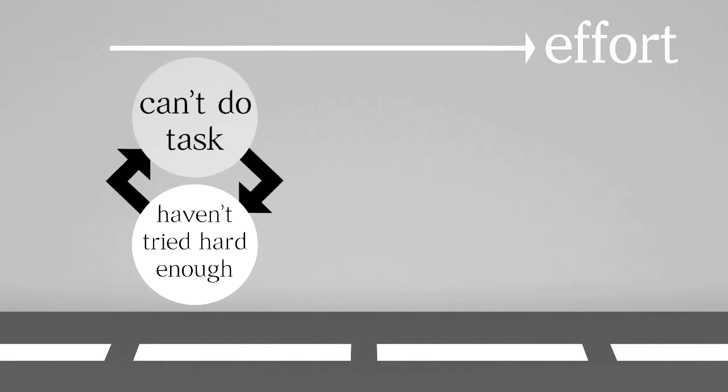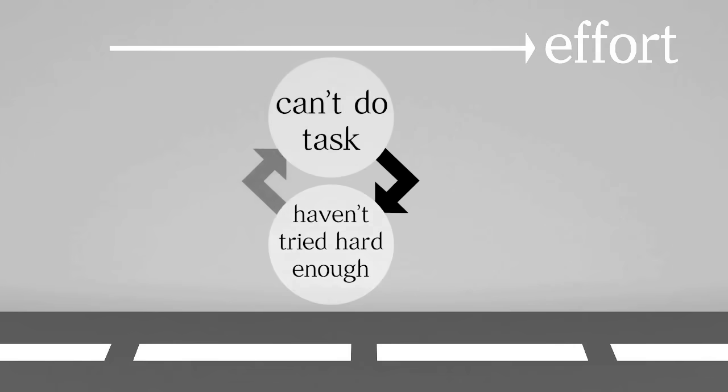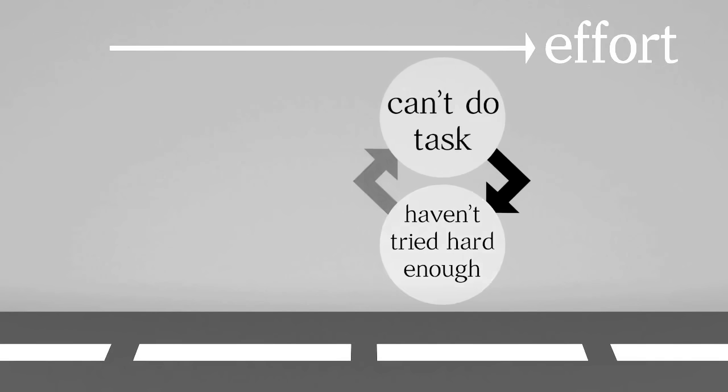In both the steady learning and eureka moment tasks, the haven't tried hard enough circle acts as a simple algorithmic prompt to determine whether further effort is needed. If the task can't be done, more effort is required. If it still can't be done, still more effort is required, and so on, until finally it can be done.